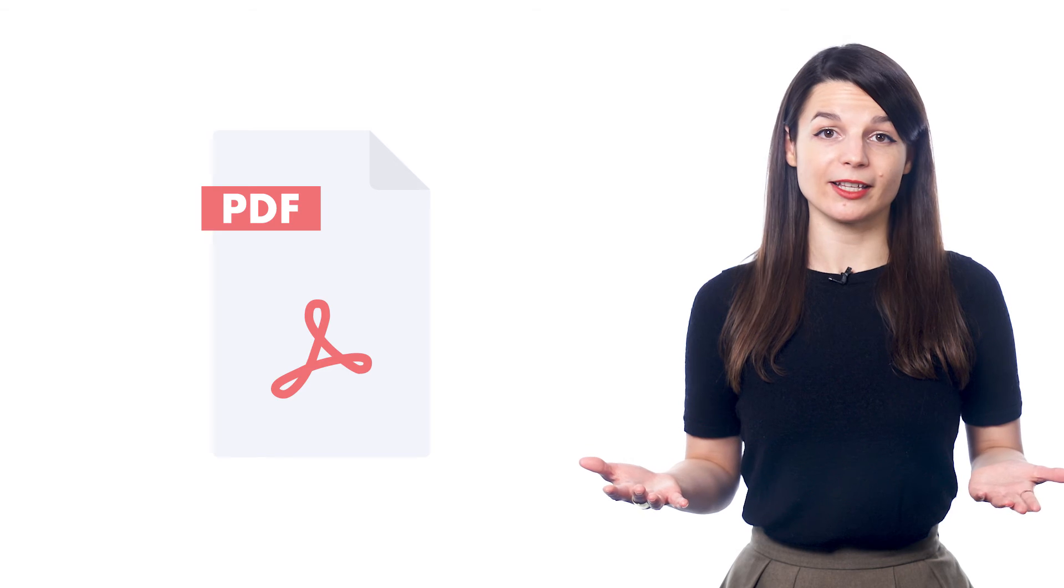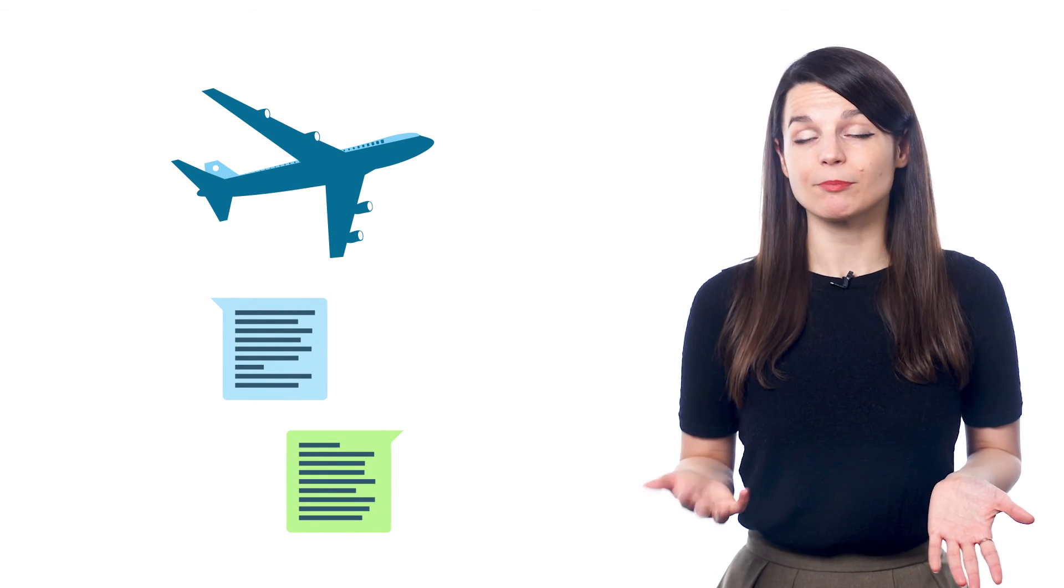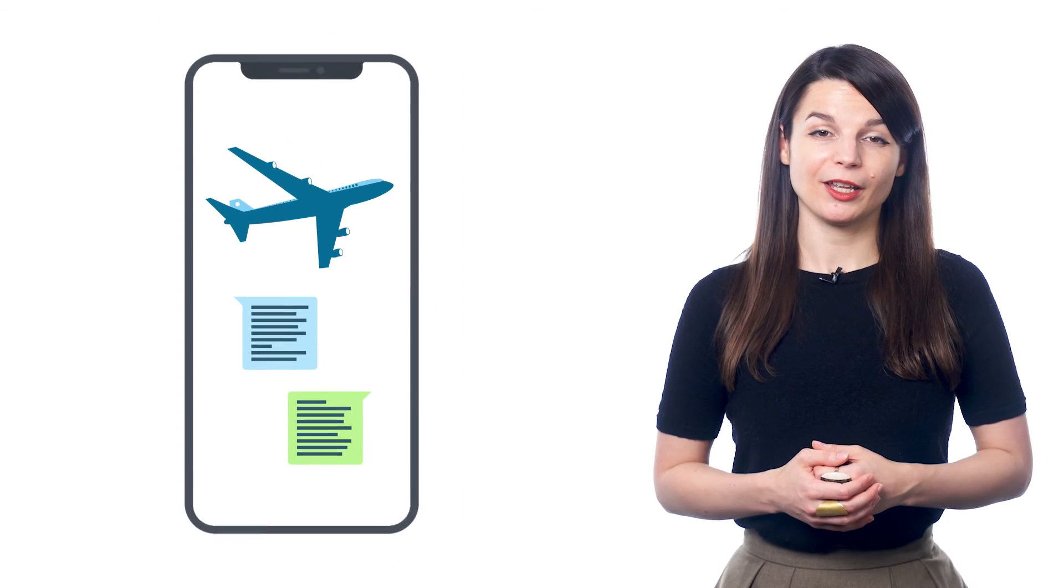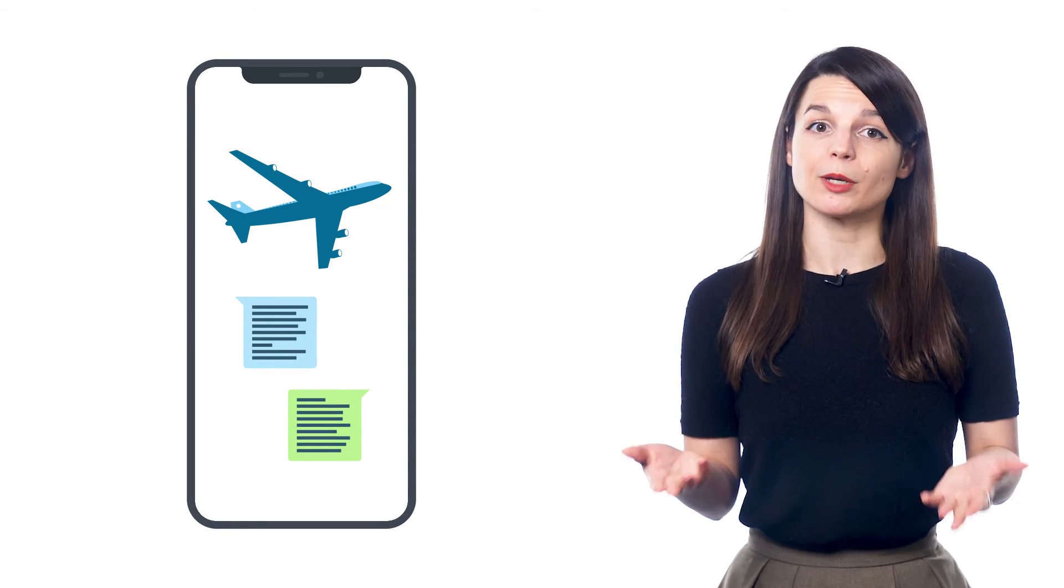You can also print out PDF conversation cheat sheets and infographics. These teach you the must-know words and phrases for all kinds of topics. Travel, basic conversations, talking about hobbies, airport vocab, and much more. With the infographics, you can save the images to your phone and just swipe through them for a quick review.